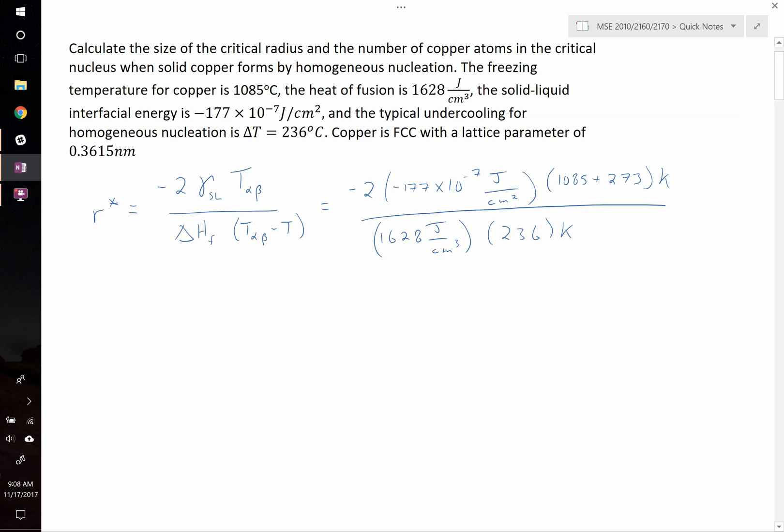And since we're talking about differences in temperature, we can use Kelvin there. Actual temperature Celsius doesn't equal Kelvin, but Celsius and Kelvin are on the same scale, so a difference in temperature, we can just convert directly. Okay, plugging values in for this, we find that our critical nucleus radius is going to be 12.51 times 10 to the negative 8 centimeters.